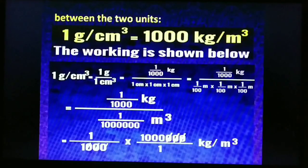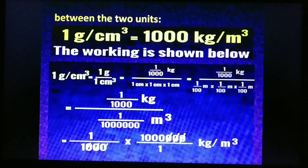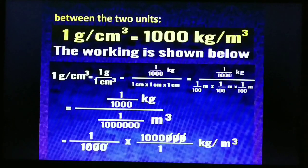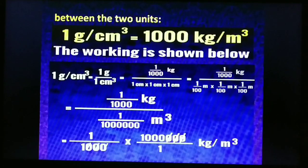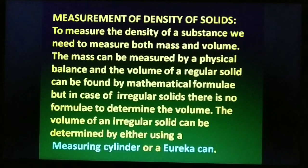The relation between the two units: 1 gram per centimetre cube equals 1000 kg per metre cube. This is derived by converting gram to kilogram (divide by 1000) and centimetre cube to metre cube (divide by 10 to the power 6), giving 1000 kg per metre cube.